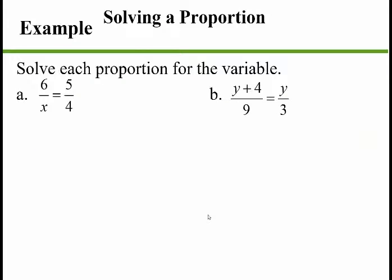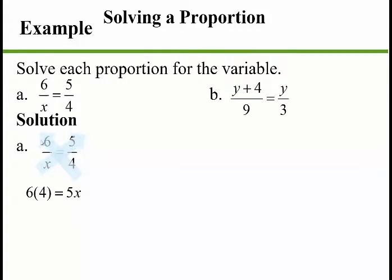Let's solve each proportion for the variable. Whenever you have a fraction equal to a fraction, use cross-multiplying. In part a: cross-multiply to get 6 times 4 equals 5 times x, so 24 equals 5x. Divide by 5 and x equals 24 over 5. It's okay to get a fraction as a solution — that's not a big deal.